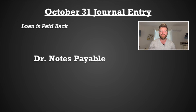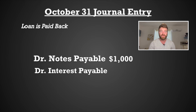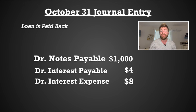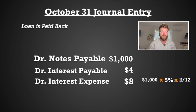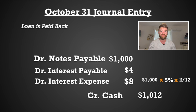Our October 31st journal entry: first, we debit notes payable, removing the $1,000 in principal off the books. Next, we debit interest payable to remove the $4 off the books from earlier. And lastly, we debit interest expense for $8. How did we get that? There are two months remaining after August 31st — September and October — so we record the interest accrued: $1,000 times 5% interest times 2 months divided by 12 months. And lastly, we credit cash for the total, which is $1,012 that your friend will pay you.